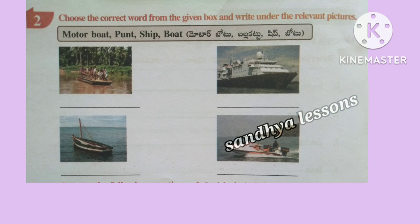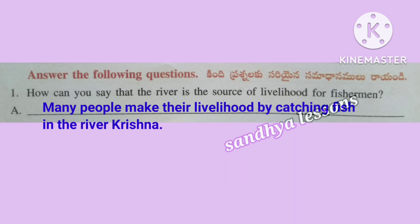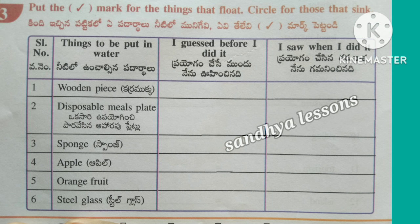Second, choose the correct word from the given box and write under the relevant pictures. First picture is Punt, second picture is Ship, third picture is Boat, fourth picture is Motorboat. Next, answer the following questions. First question: How can you say that the river is the source of livelihood for fishermen? Many people make their livelihood by catching fish in the river Krishna. Third, put a tick mark for the things that float and a circle for those that sink.